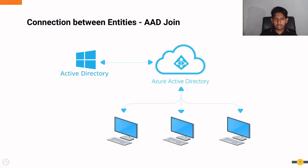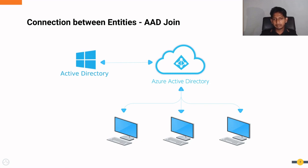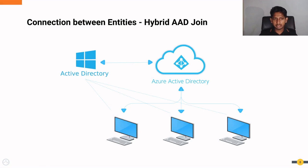This diagram describes the high-level connectivity between entities in Azure AD join. As you can see, end user devices are only connected to Azure Active Directory, and Azure Active Directory maintains a separate connection with the on-premise Active Directory. When a user tries to log in, the request first comes to Azure Active Directory, which communicates with the on-premise Active Directory to validate the user's authenticity. In the hybrid Azure AD join scenario, there is also a separate connection between the on-premise Active Directory and the end user devices, allowing the on-premise AD to enforce some device policies without going through Azure Active Directory.